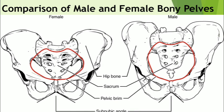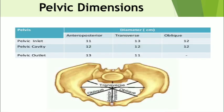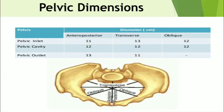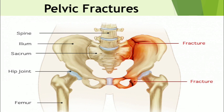Next are pelvic dimensions — the pelvic diameters, also called pelvic conjugates. At the pelvic inlet, the anteroposterior diameter is 11 cm, the transverse diameter is 13 cm, and the oblique diameter is 12 cm. Within the pelvic cavity, the anteroposterior, transverse, and oblique diameters are all 12 cm. At the pelvic outlet, the anteroposterior diameter is 13 cm and the transverse diameter is 11 cm. These dimensions are all illustrated in the diagram.